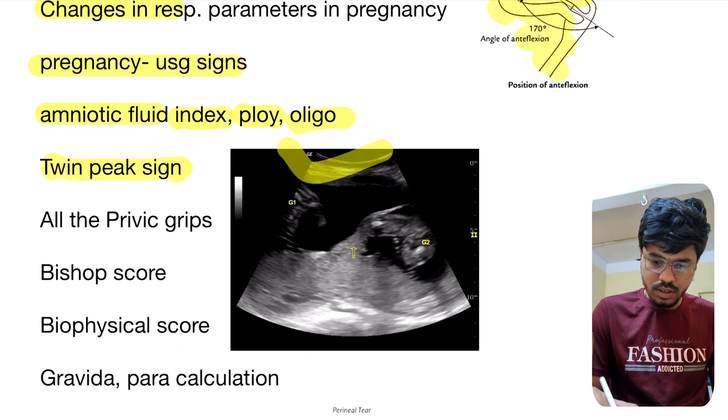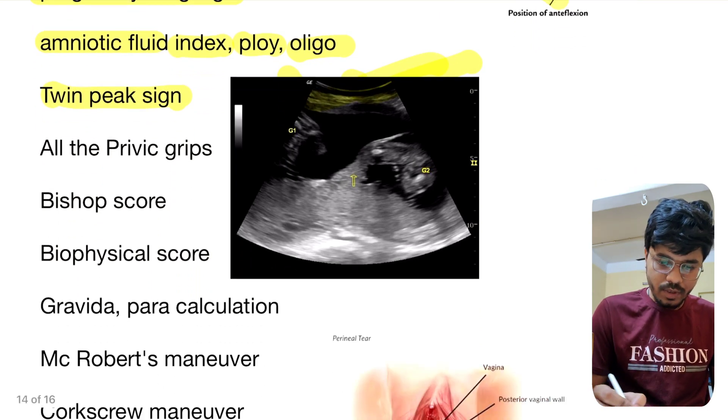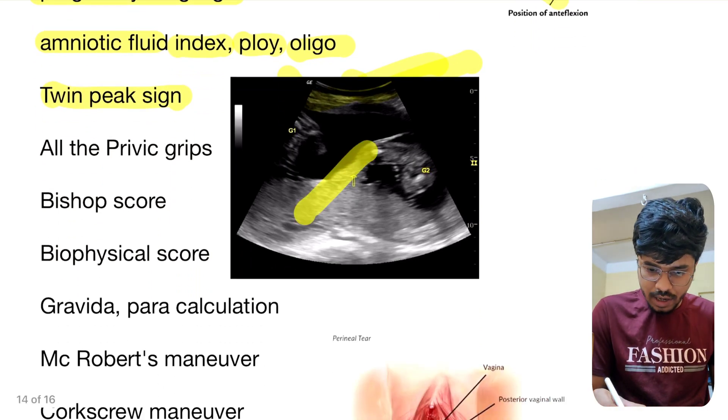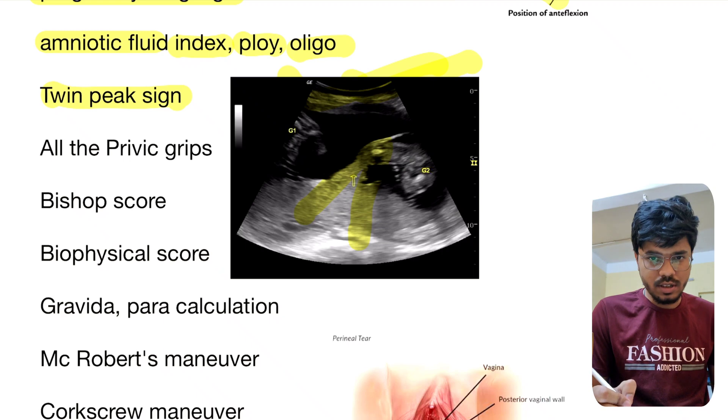Twin peak sign — this is the twin peak sign — meaning dichorionic placenta.